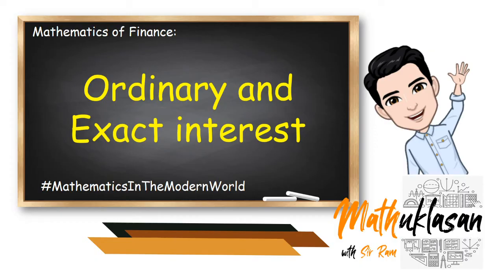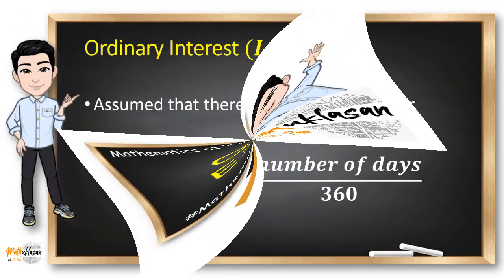So when we use these types to find the interest, we have ordinary and exact interest. In an ordinary interest, denoted in this video as I sub O, assume that there are 360 days in a year. So the simple interest formula becomes I sub O equals P for the principal amount times the rate given times the number of days divided by 360.